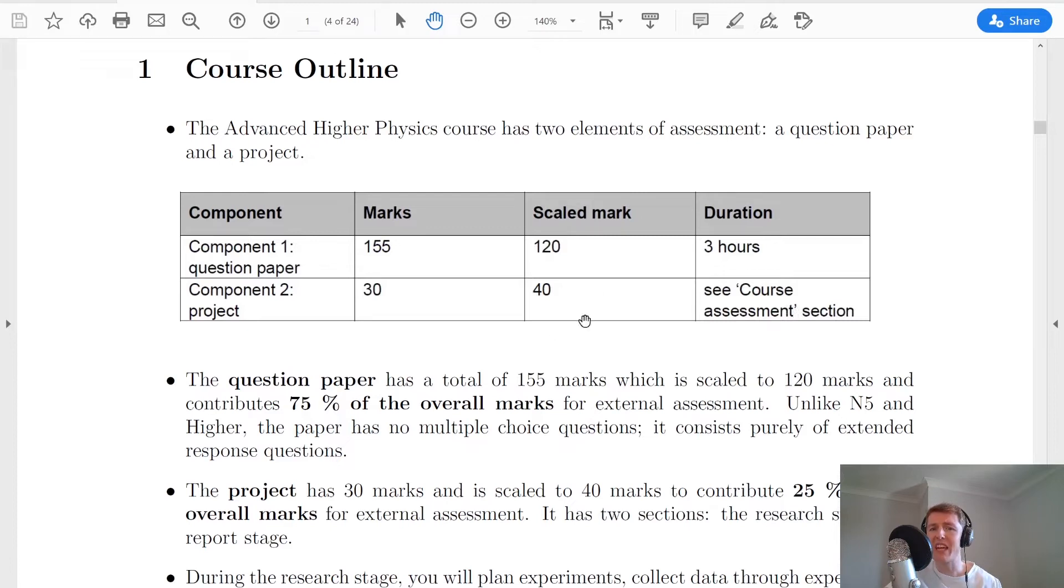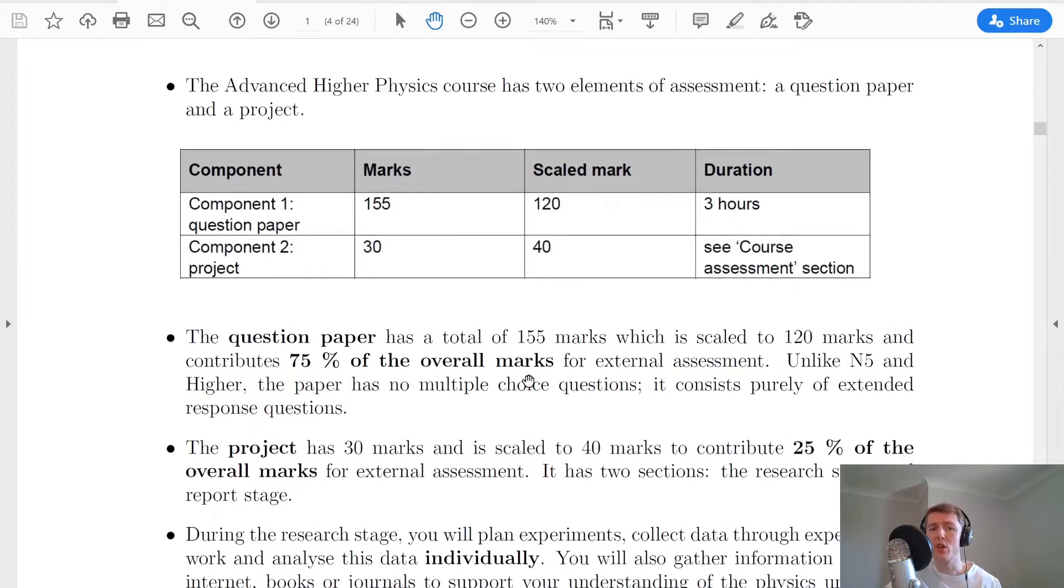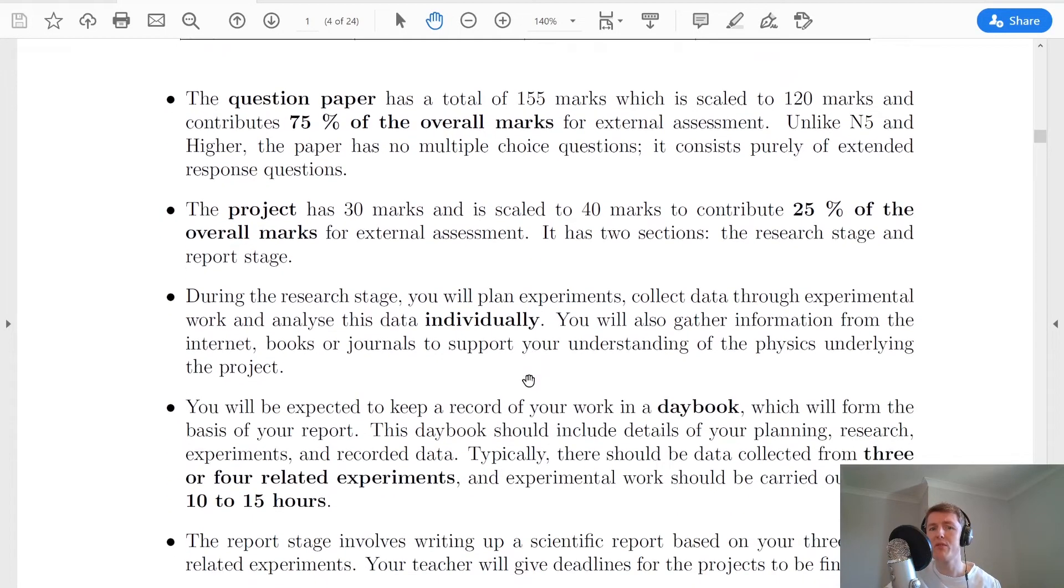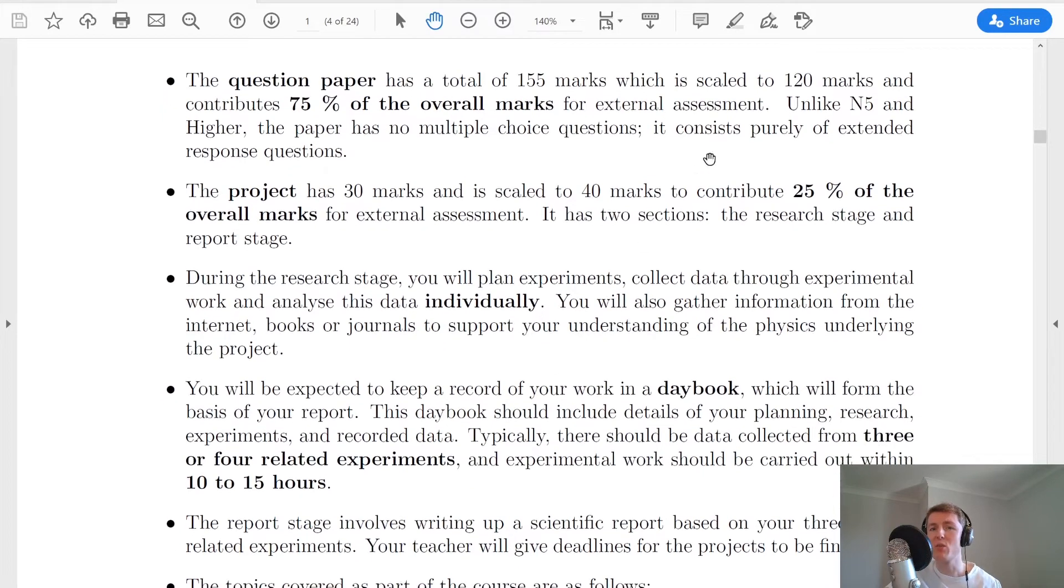We'll also talk about the scalings of the mark just now. So the question paper is a total of 155 marks, which is scaled to 120 marks. So this is scaled down and it means that each mark for the longer paper in the final exam is actually less than one mark. And this contributes 75% of the overall marks for external assessment. This is different to the final exams for the Nat 5 and the higher course because the final exams contributed 80% for the Nat 5 and higher courses.